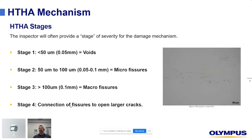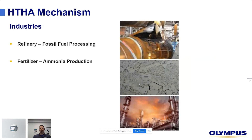The severity of HTHA is divided into four stages. Stage one is below 50 microns or 0.05 mm — the most minimal — all the way up to stage four, which is basically too late: connection of fissures to open larger cracks. Industries where we can find HTHA include refineries, fossil fuel processing, and fertilizer plants where ammonia is produced.